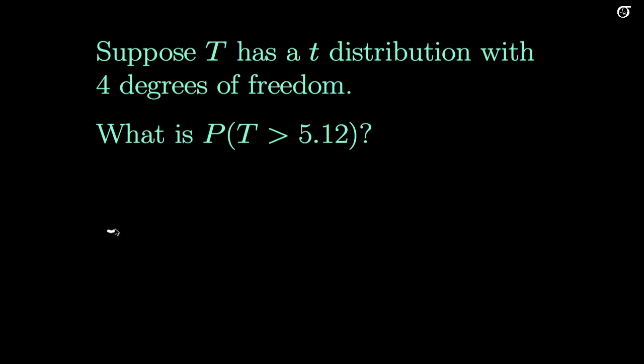First thing we should do is draw our t-curve. The t-distribution looks a lot like the standard normal curve, only it has more area in the tails. We put 5.12 here, and our probability that t is greater than 5.12 is simply the area under the curve, because probabilities are areas under curves for continuous random variables, and that's the area out to the right of 5.12.